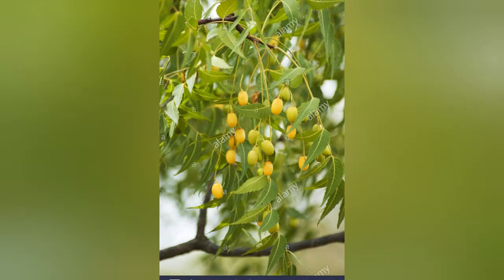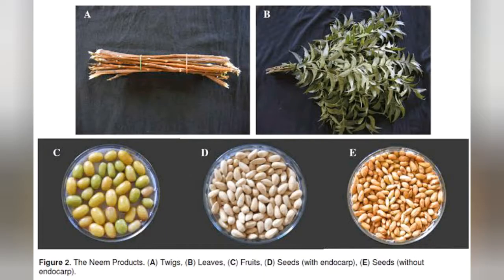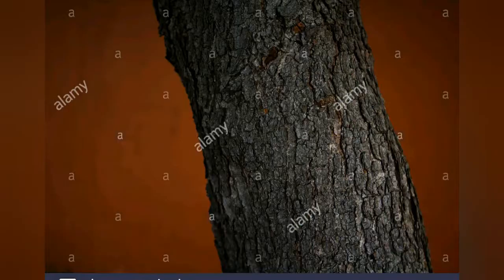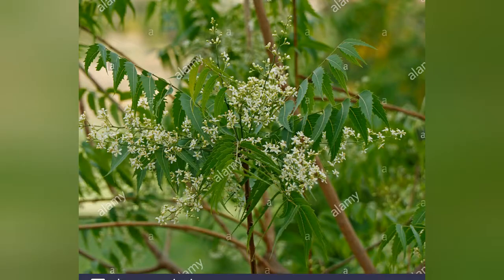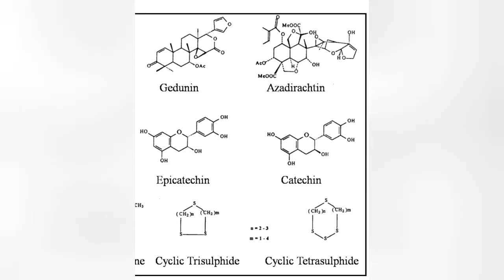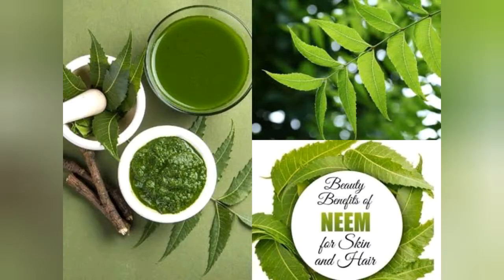More than 135 compounds have been isolated from the different parts of the neem plant. These compounds have been divided into two major classes: isoprenoids and non-isoprenoids. These are mainly proteins, polyphenolics, and carbohydrates in nature. The principal chemicals found in these plants include nimbine, azadirachtin, and nimbidine, which are the most important.